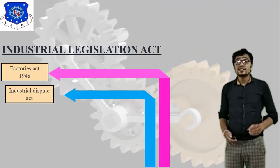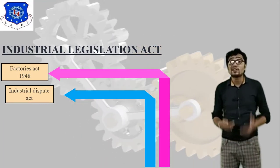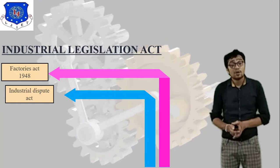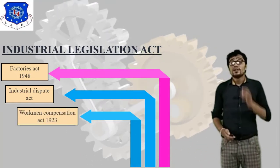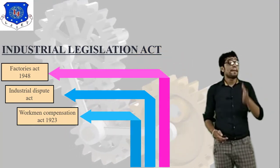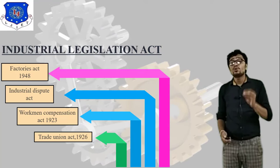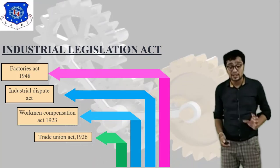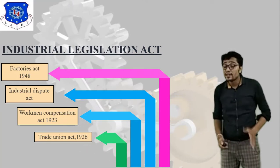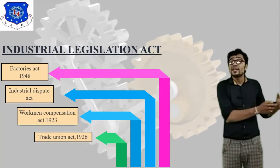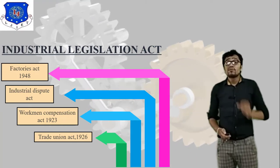Number two is the Industrial Dispute Act — covering what Industrial Dispute is and its objectives. Third is the Workman Compensation Act 1923, and fourth is the Trade Union Act 1926. These are the different types of Industrial Legislation Acts followed by each and every industry.